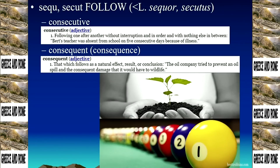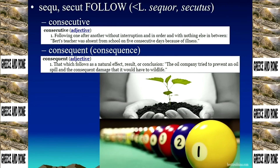Consequent — that which follows as a natural effect, result, or conclusion — is about causation. 'The oil company tried to prevent an oil spill and the consequent damage to wildlife' — that's the damage that follows upon because of the cause of the other thing. Any philosophy majors know that this has resonance with Hume in his explorations of causality, pretty much trying to disprove causality. That plant coming out of the soil is a consequential relationship — it comes from the soil because there was a seed.